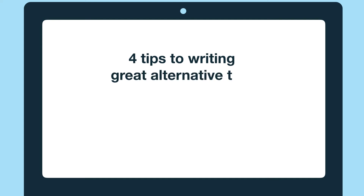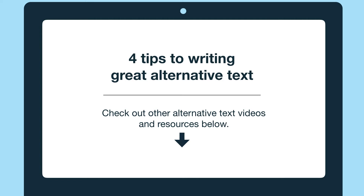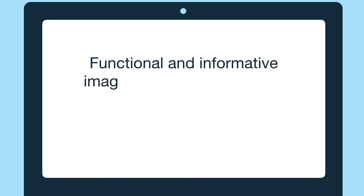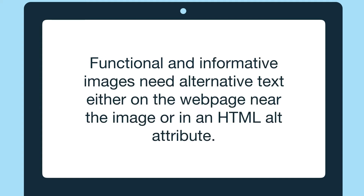In this video we'll go over four tips to writing great alternative text with some examples. Check out our other alternative text videos to go over what it is, the types of images there are, and when an alt attribute should be empty, or take a look at the article version of this content and other resources below. Let's get into these four tips. Functional and informative images need alternative text, either on the web page near the image or in an HTML alt attribute.